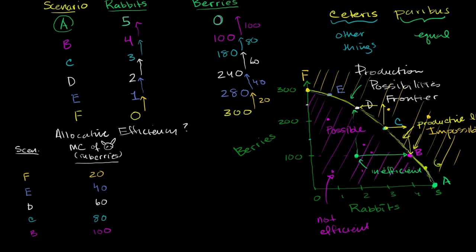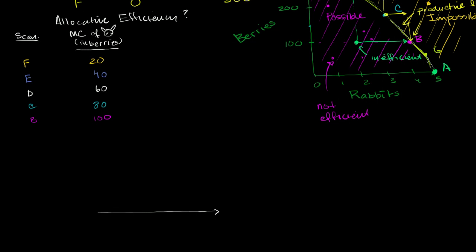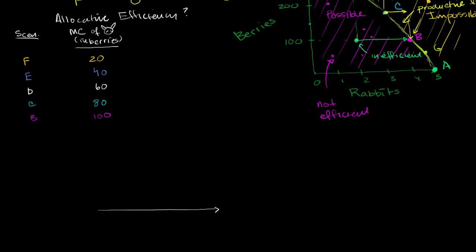And we can actually plot these on a graph. Let me draw one axis over here. This will be useful. Let's call the horizontal axis the different scenarios. Instead of labeling by scenario, let me just talk about it in terms of the number of rabbits.